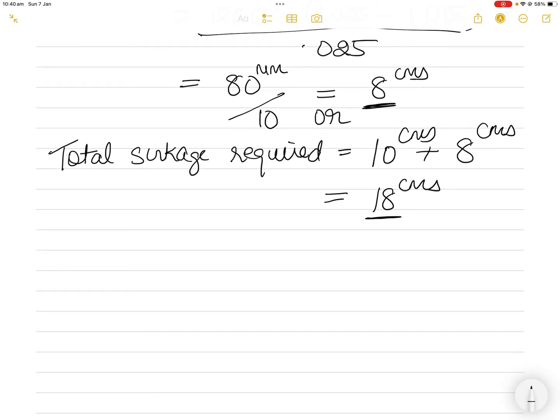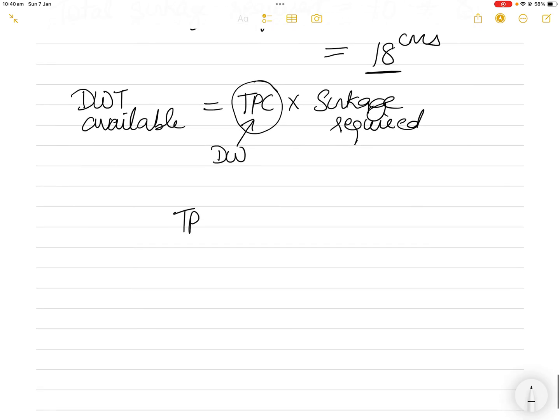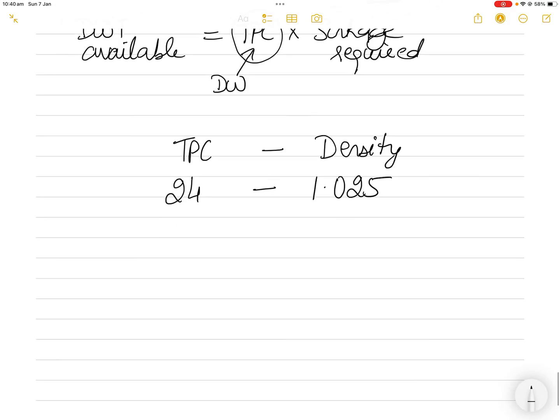To find deadweight available, multiply TPC by sinkage required. However, the TPC given to me (24) is for saltwater, so I have to convert this into dock water TPC. Remember, TPC is proportional to density. The TPC of 24 is for density 1.025.